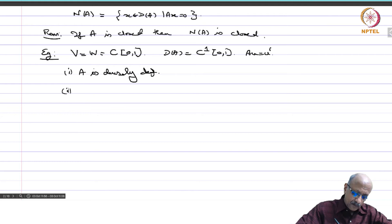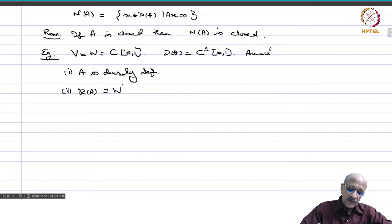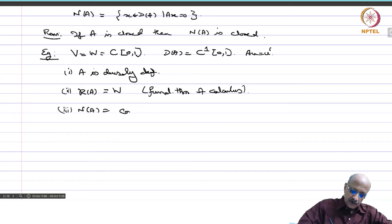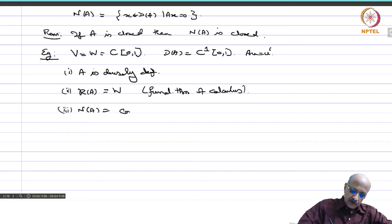The range of A is all of W = C[0,1], because if you take any continuous function then its indefinite integral is a differentiable function and its derivative is the given function — this is nothing but the fundamental theorem of calculus. The null space N(A) consists of just the constant functions.